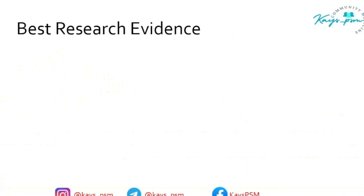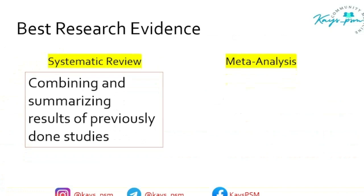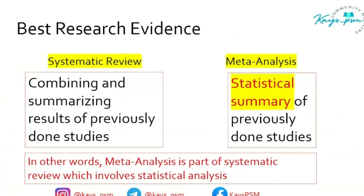In evidence-based medicine, the best research evidence can be given by systematic review or meta-analysis. What is the difference between the two? Combining and summarizing results of previously done studies — for example, study A found 75% survival, study B found 80% survival; I am just summarizing their values — this is a systematic review. But if I use a statistical technique and mix these results to find a new result, this is meta-analysis.